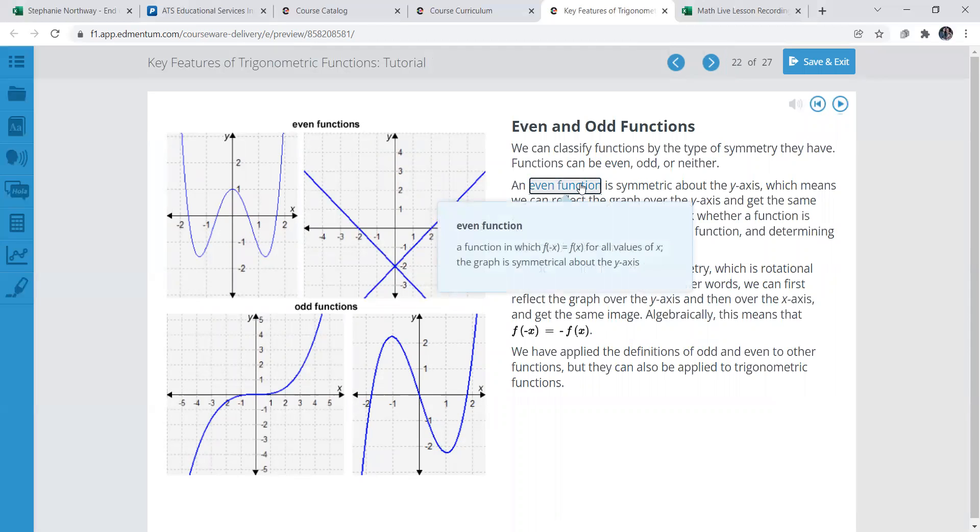Even functions here. Even function: a function in which f of negative x equals f of x for all the values of x. The graph is symmetrical about the y axis.